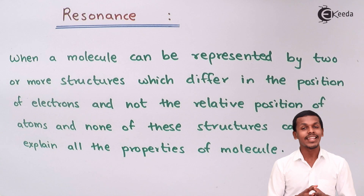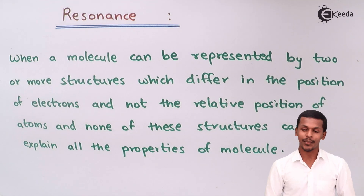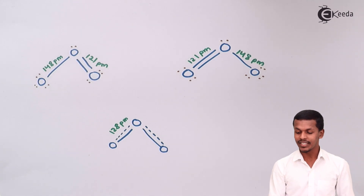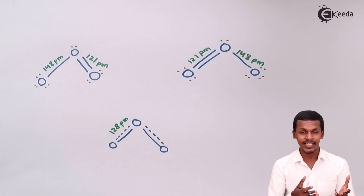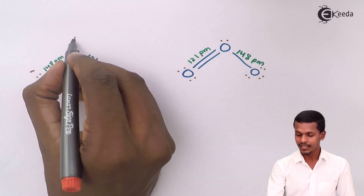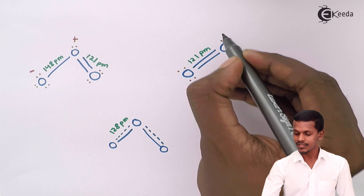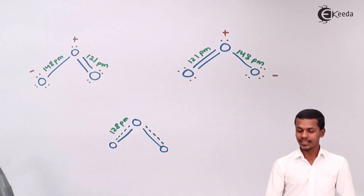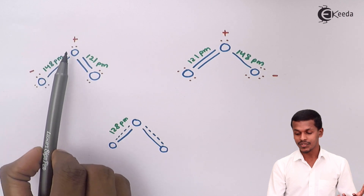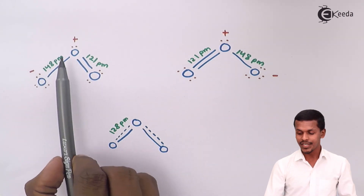Let me talk about the resonating structures with an example. Suppose we are giving the resonating structures of ozone. Ozone can be represented with charges — one oxygen will have a negative charge while another will have a positive charge. Ozone is made up of three oxygen atoms, with a double bond between one pair of oxygen atoms and a single bond between another pair.